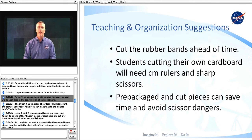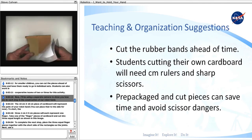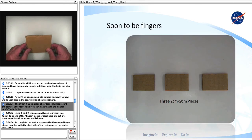Now, I'll be using a separate camera to show you how to do each step in the construction of our robot hand. The 10 centimeter by 10 centimeter piece of cardboard will represent the palm of your robot hand. You can place that to the side for now.